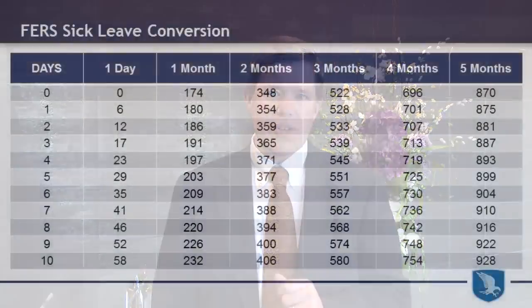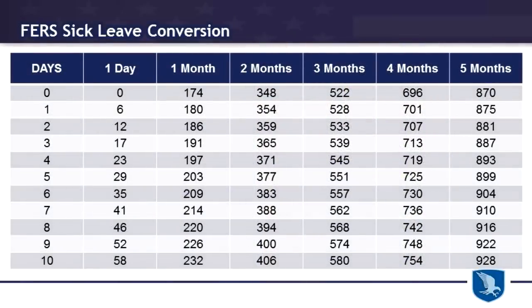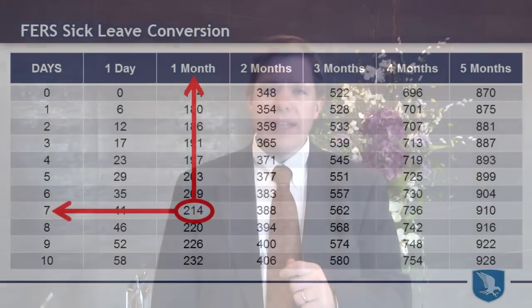Let's take a quick look at the conversion chart. This chart shows that if you have, say, 214 hours of sick leave, it would equate to one month, seven days on your retirement annuity calculation. This can be a great addition to both FERS and CSRS employees.